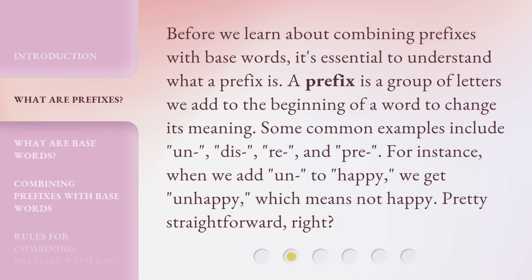Before we learn about combining prefixes with base words, it's essential to understand what a prefix is. A prefix is a group of letters we add to the beginning of a word to change its meaning. Some common examples include un-, dis-, re-, and pre-. For instance, when we add un- to happy, we get unhappy, which means not happy. Pretty straightforward, right?